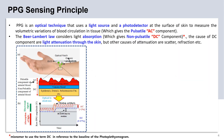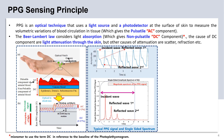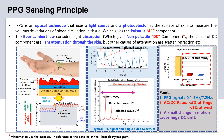PPG Sensing Principle: PPG is an optical technique that uses a light source and photodetector at the surface of the skin to measure the volumetric variation of the blood circulation in tissue. These are the properties of the PPG signal in the time domain and frequency domain.